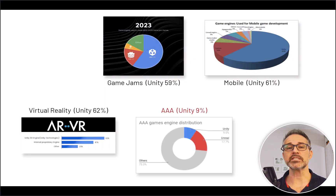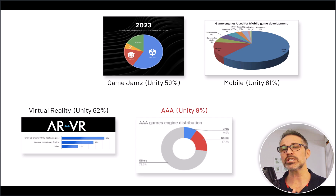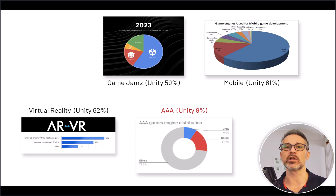Now, the popularity of these engines — all three are quite well used — but we can see that in different areas of development and different scopes. For example, in game jams, Unity is taking the majority share. Unity is also the most popular in mobile development as well as in VR. So if you're interested in the indie side of things, game jams, mobile, or virtual reality, there are even more resources and perhaps job opportunities using Unity there.